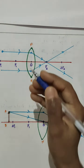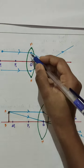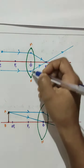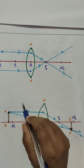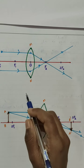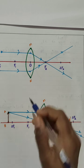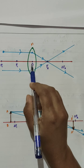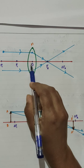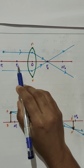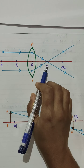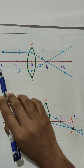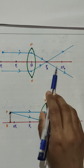Here we are considering a convex lens. Its aperture is marked as MN. Then, we know that a convex lens has two principal foci: F1 and F2. And two centers of curvature: C1 and C2, or you can represent them as 2F1 and 2F2.